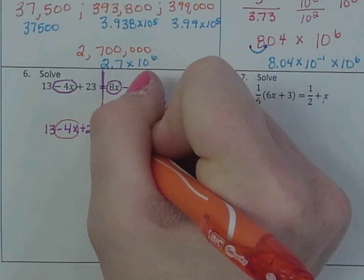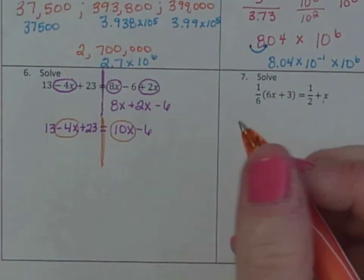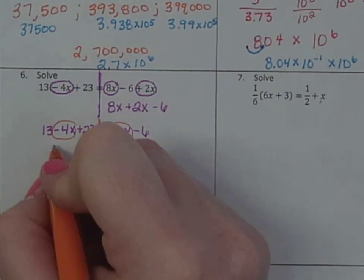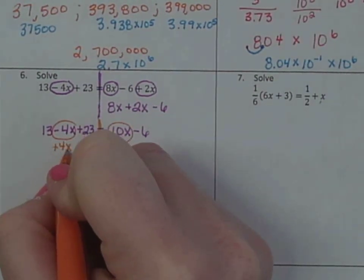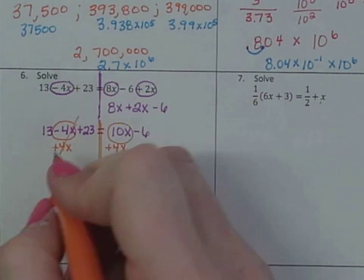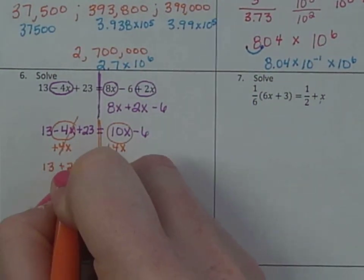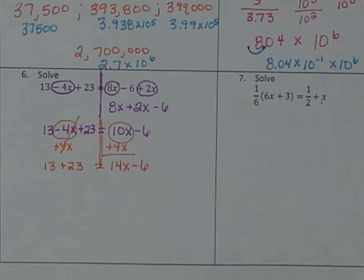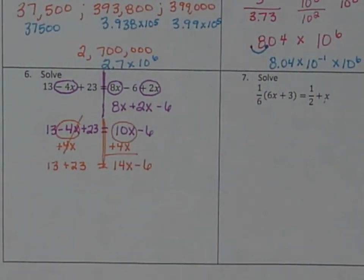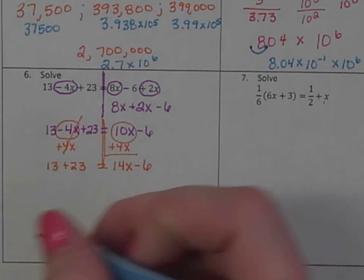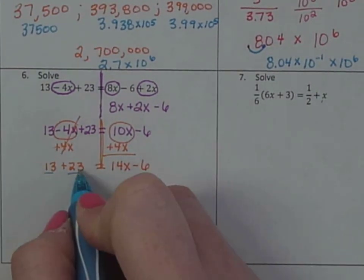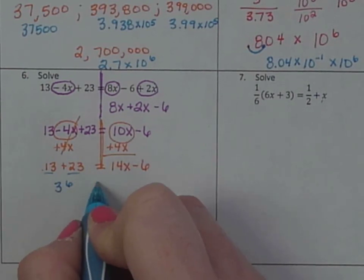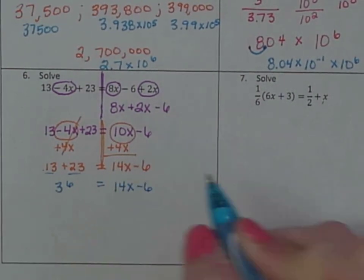Okay. Circle the variables again. Notice they're on opposite sides. So I need to do the opposite to one of them. I like moving the smaller. So I'm going to add 4x and add 4x. So that would be 13 plus 23 equals 14x minus 6. 10 plus 4 is 14. That's where I got that from. Okay. I'm going to combine these two. 3 plus 3 is 6, 2 plus 1 is 3. Bring down the equals. 14x minus 6.